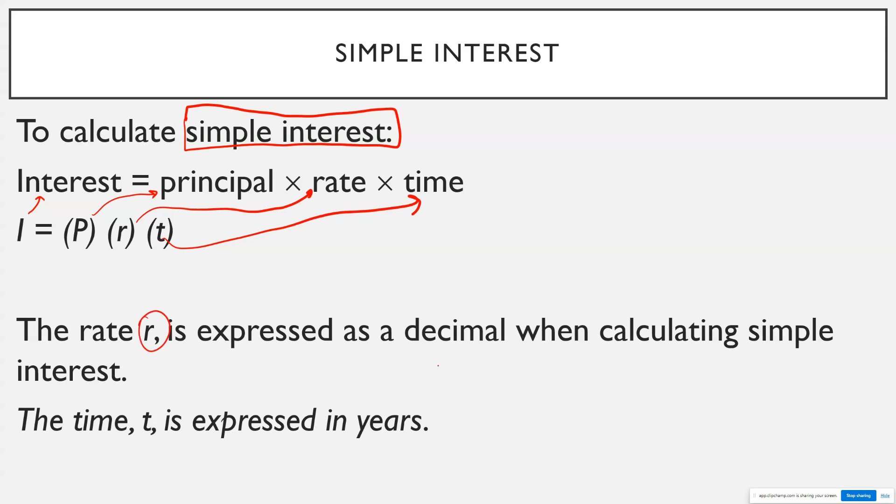The rate R is expressed as a decimal when calculating simple interest and T is going to be expressed in years. So I'll work an example where it's a full year and then I'll work an example where maybe it's just a couple months and we'll talk about how you handle that.